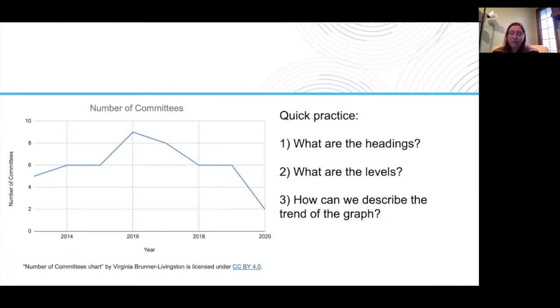For the third question, how can we describe the trend of the graph? We can use our adjectives and adverbs to describe the movement of the information or the movement of the line over time.